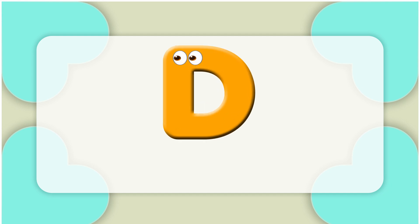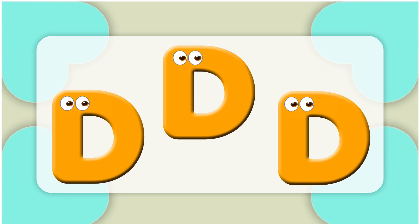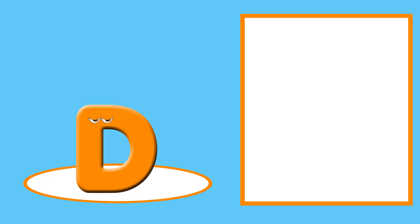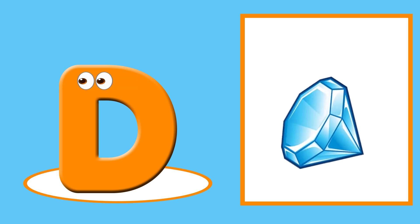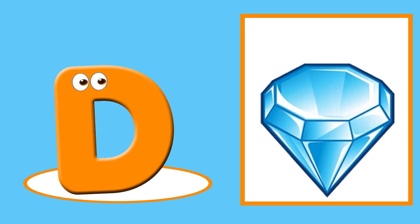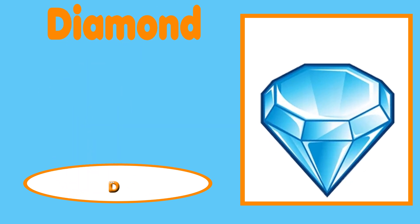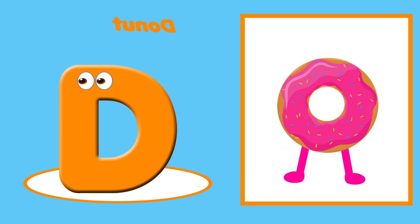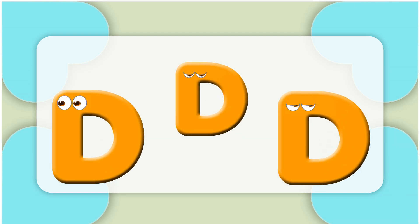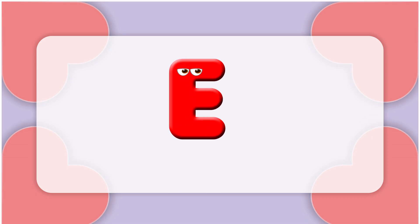This is the letter D. D is for diamond — bu, bu, diamond. D is for donut — bu, bu.